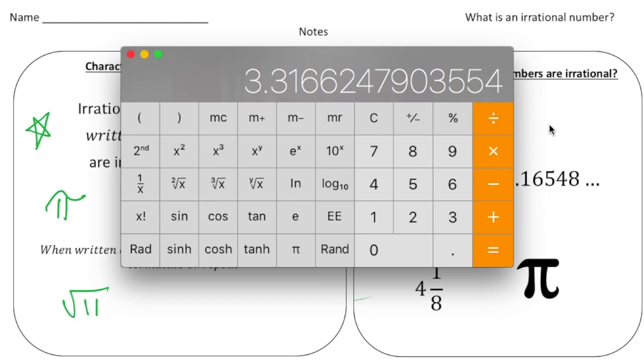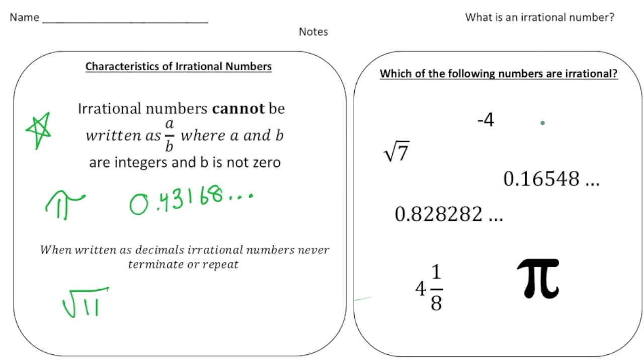So irrational numbers are numbers that cannot be written as fractions and when they're decimals, they're decimals that don't repeat and don't terminate. Over here it says which of the following numbers are irrational. Well, negative 4 is rational because we can write that as negative 4 over 1.